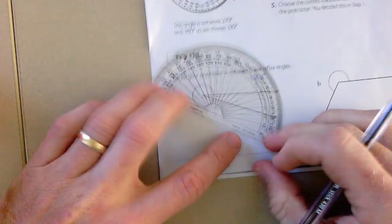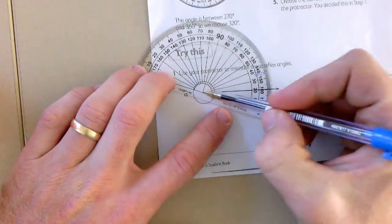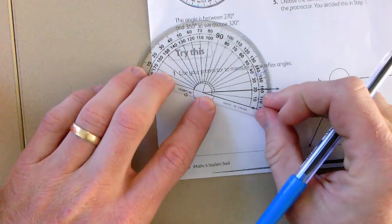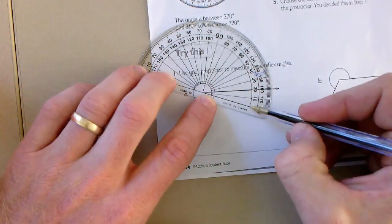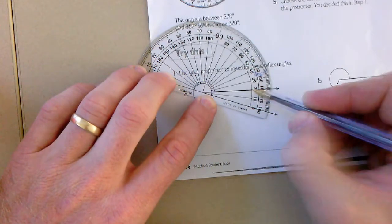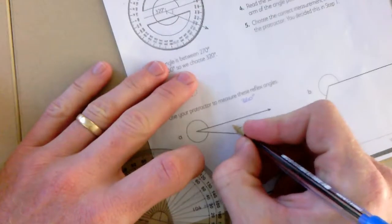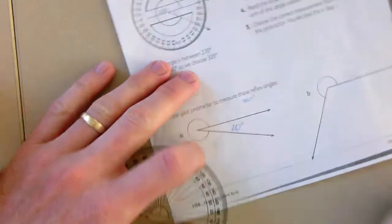So to do that, line the T up with the vertex of the angle. Make sure the baseline is along one of my rays. Then I can count 10, 20 degrees. So it's 20 degrees in here.